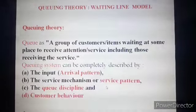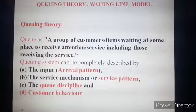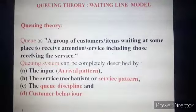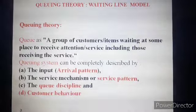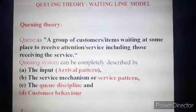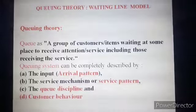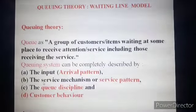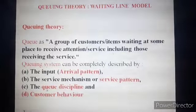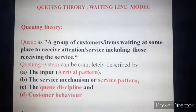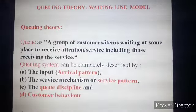Let us discuss the queuing system and the basic definition of a queue. A queue is a group of customers or items waiting at some place to receive attention or service, including those currently receiving service. In a queuing system, there are four important elements: the input or arrival pattern, the service mechanism or service pattern, queue discipline, and the behavior of customers in the queue.